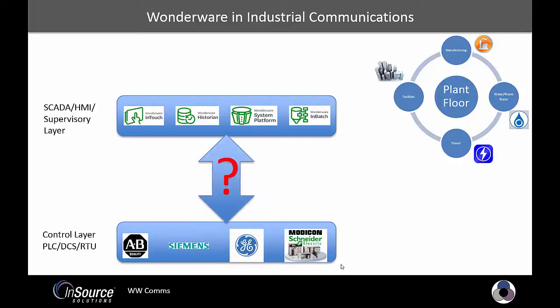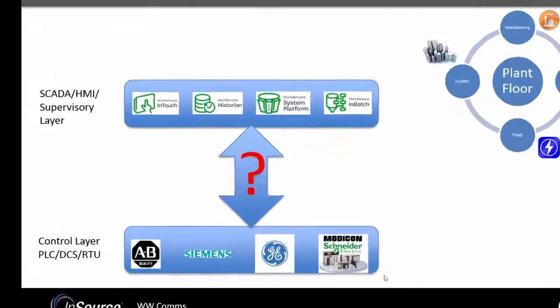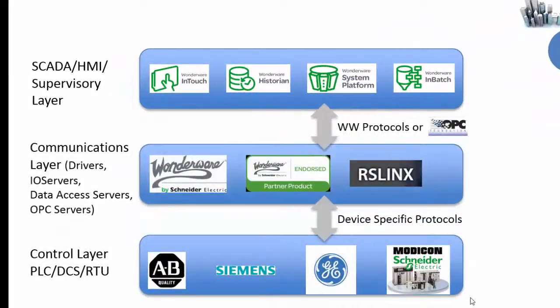Most of the time the components of these two layers do not know how to communicate with each other to provide the real-time data flow needed on the plant floor. There is a required third layer that translates the control layer protocols to the protocols used by the Wonderware technologies in the supervisory layer. These data access or DA servers provide a real-time two-way communication path between Wonderware systems and the control systems.